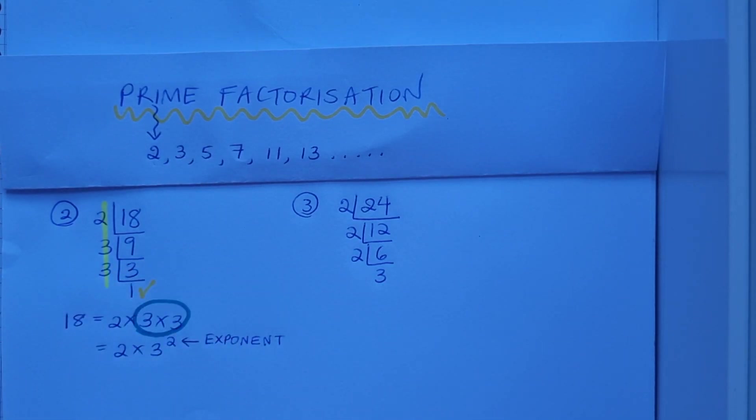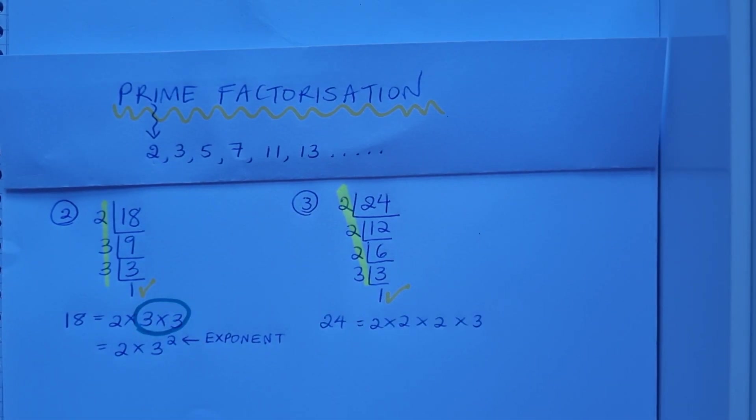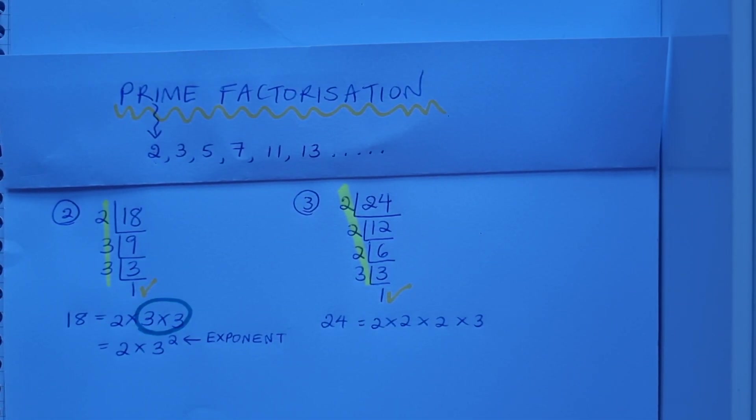But what will go into 3? 3 will go into 3, and it'll go in once. I've got to 1, I'm done. My prime factors are listed down the side: 2 by 2 by 2 by 3. I can write 24 as the product of its prime factors.